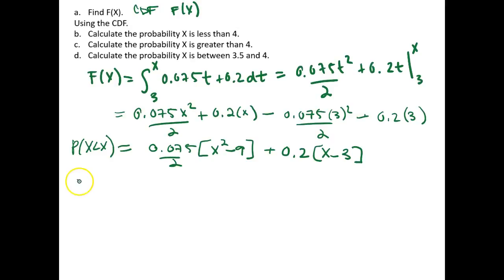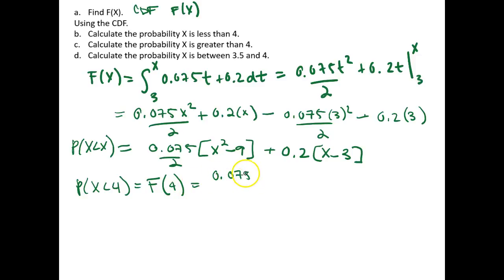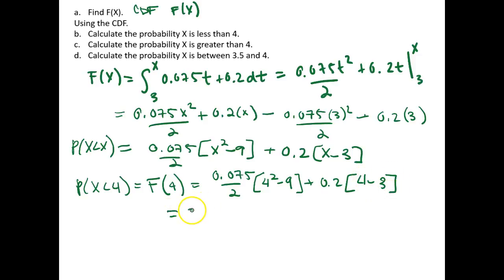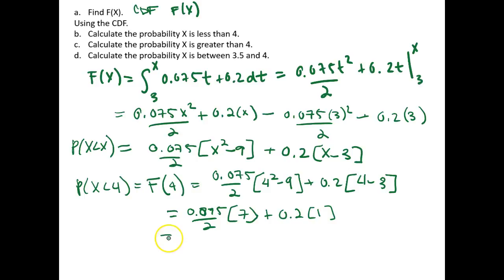The probability of x being less than 4 is simply the cumulative density function evaluated at 4. So F of 4 equals 0.075 over 2 times (4 squared minus 9) plus 0.2 times (4 minus 3), which is 0.075 over 2 times 7 plus 0.2 times 1, giving 0.2625 plus 0.2, equal to 0.4625. The likelihood that the current is less than 4 is 0.4625.